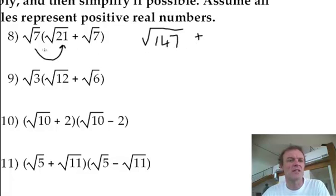Plus, what's root 7 times root 7? Now remember this one, this is a shortcut one. Root 7 times root 7 is just 7.